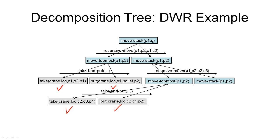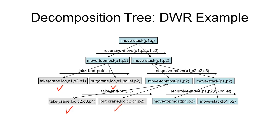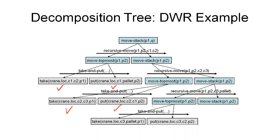Again this is a non-primitive task, so we find a method and use it to refine the task into two subtasks where move-topmost is the first one. We find a take-and-put method that matches, refine it into two primitive tasks, and find actions for both. We then turn to the final task — moving a stack from P1 to P2 — but now there are no containers left in the state. So we apply the no-move method, which gives us the empty plan as the result. This is essentially how the ground TFD algorithm works.